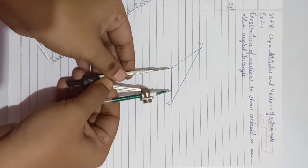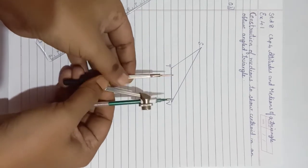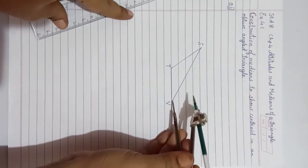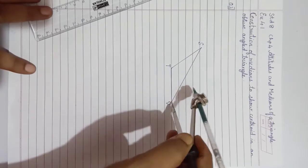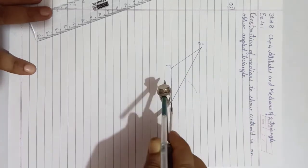Take the rounder more than half the size of the segment. From point P, draw an arc up and down.